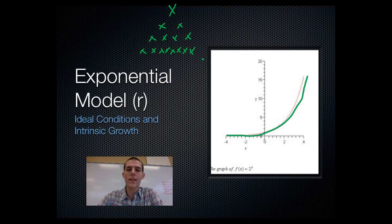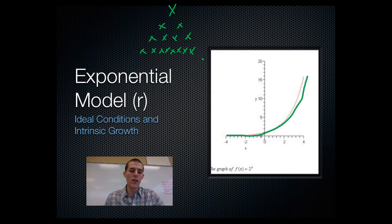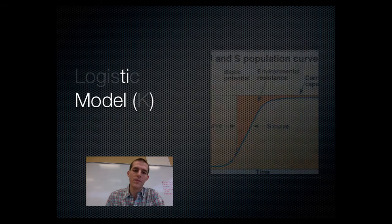Recognize this as an exponential curve. Know that it is based on the intrinsic growth of an organism — meaning the absolute rate at which an organism can reproduce — and that this occurs under absolutely ideal environmental conditions.